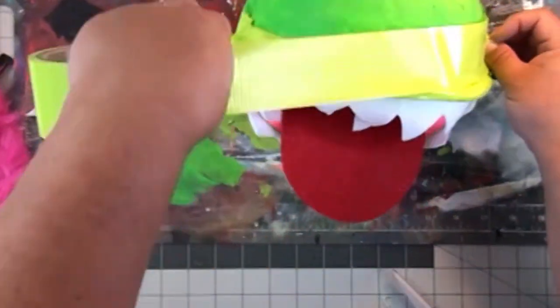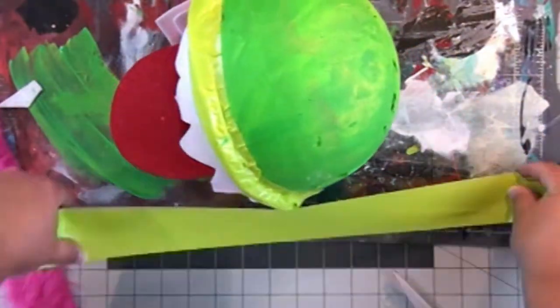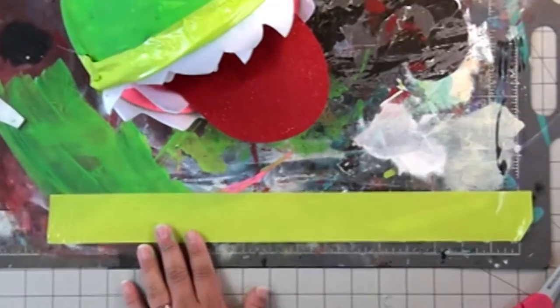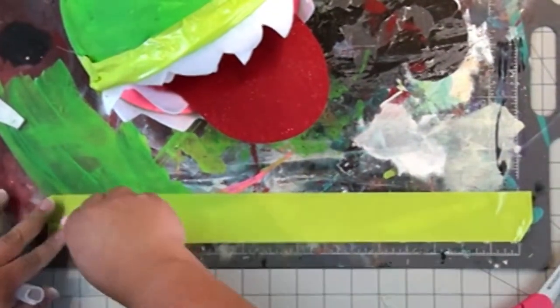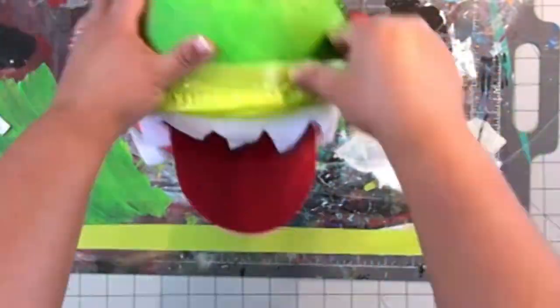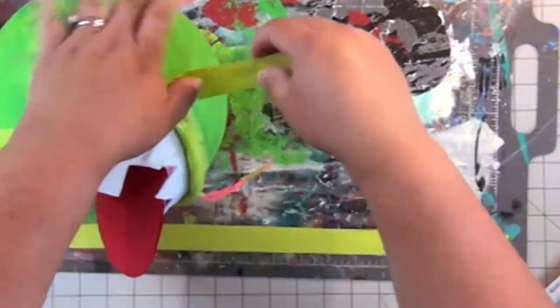Then I decided to take more duct tape and kind of reinforce around the head. But because it's curved, it's kind of hard to curve this whole two inch wide piece of duct tape. So I used a craft knife and cut it in half to make it one inch wide, and that seemed to be a lot easier to work with on the curved surface.